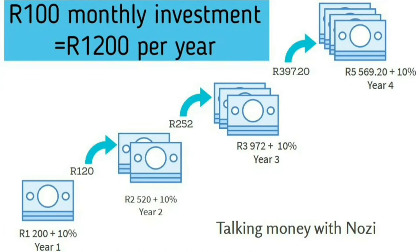Today I'm going to use a compound interest calculator to show you how to turn 100 rand into 1 million rand if your investments compound annually by 10%. Let me explain what compound interest is. Compound interest is the interest that you earn on your contributions plus any interest that you earned before. You only get compound interest when you reinvest your interest and when you don't withdraw your money — if you withdraw your money, compound interest stops working.